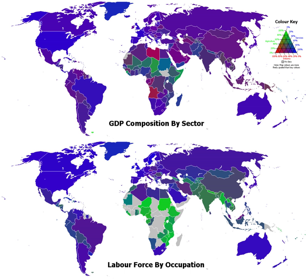The Industrial Revolution, from the mid-18th century to the mid-19th century, saw the development and popularization of mechanized means of production as a replacement for hand-production. The Industrial Revolution also played a role in the abolition of slavery in Europe and in North America.